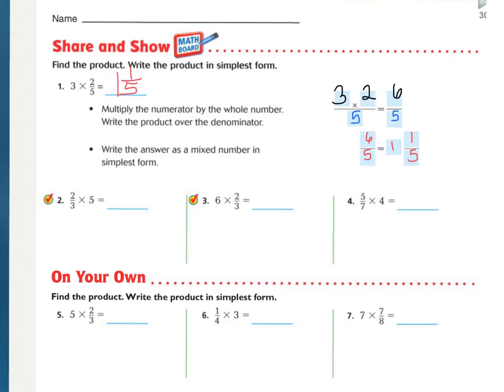So number 2, if we follow the same steps, we take our numerator times our whole number over the denominator. Multiply it out, 10/3. How many 3s in 10? There are 3. That's 9, so we would have 1 left over over the denominator of 3, so 3 and 1/3.